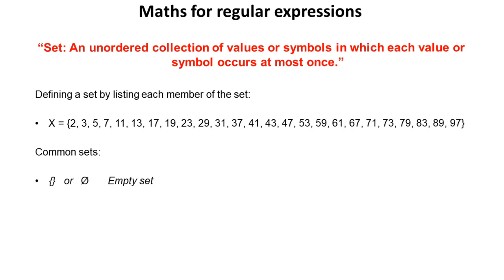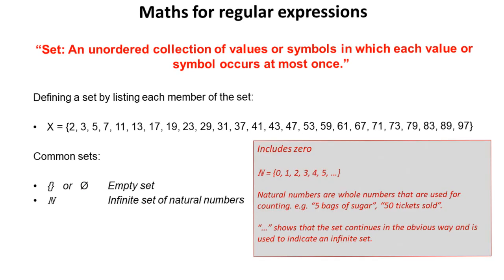It's important to understand some common sets which are available in the shorthand notation. If we just want to represent an empty set, we can simply use the open and close curly brackets, or we can use this symbol here. We can specify the set N using this notation here. This is the infinite set of natural numbers. This includes zero, but doesn't include negative numbers. And it includes every whole number upwards onto infinity. The dot dot dot meaning that the set continues in the obvious way.